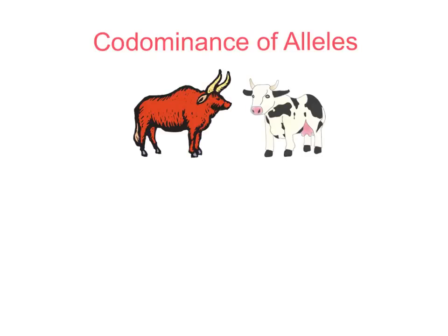They are not blended, as Mendelian genetics first suggested would happen. We're going to use two pictures in the middle of the screen to talk through what you'd get in this kind of scenario — a past exam question. On the left-hand side is a red bull, and on the right, a white cow. Another example you could refer to is the AB blood grouping, which results from two alleles, A and B — I've done a separate video about blood grouping if you wish to watch that.